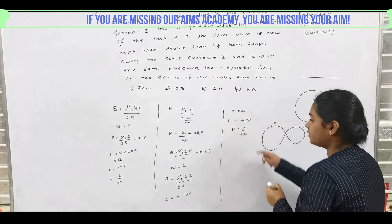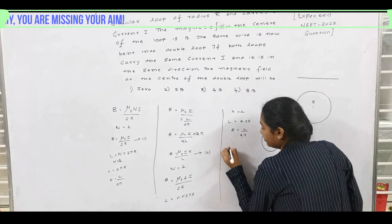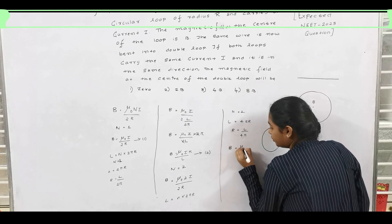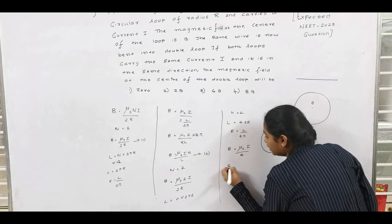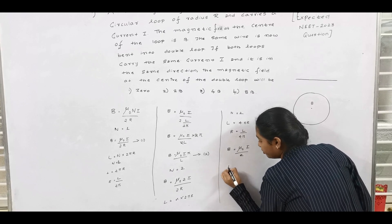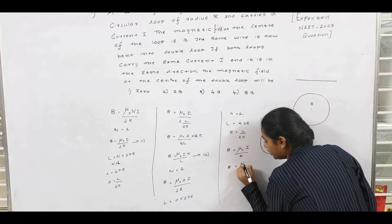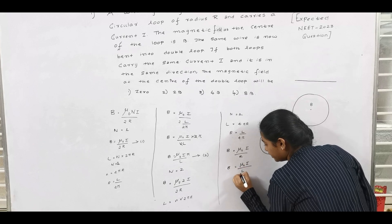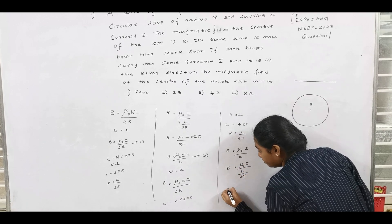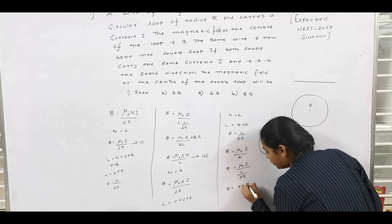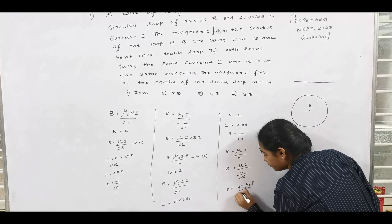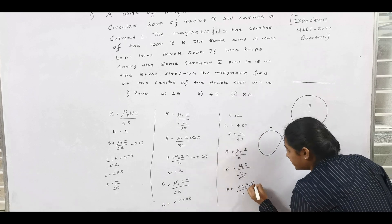Now r is equal to L by 4 pi. Now if you substitute in the equation we get B is equal to mu naught i by r. Here r is equal to L by 4 pi. So B is equal to mu naught i by L by 4 pi. So we get B is equal to 4 pi mu naught i by L. We take this equation as 3.